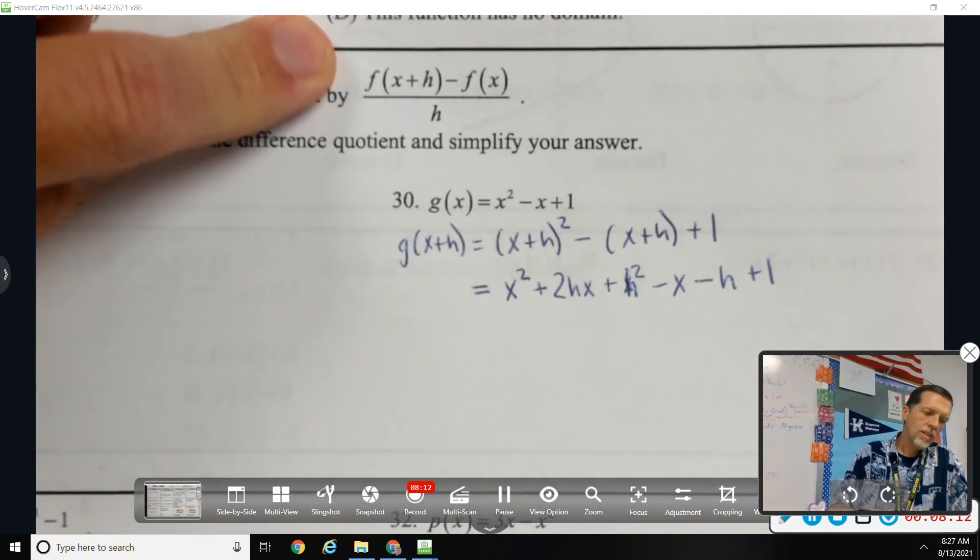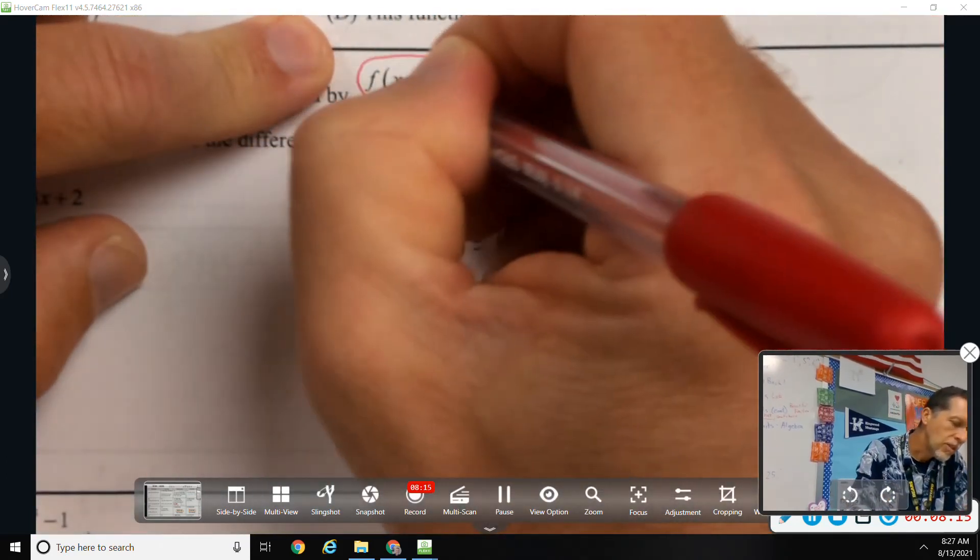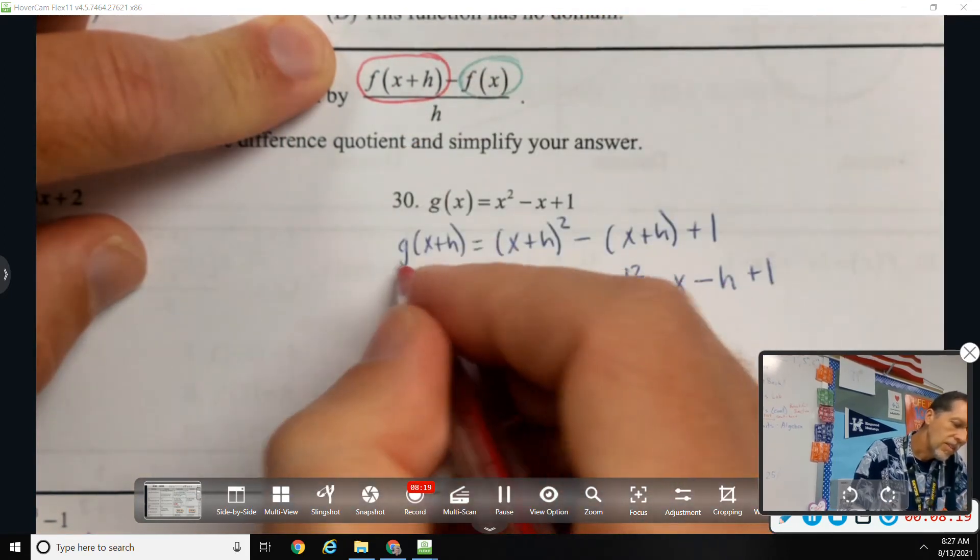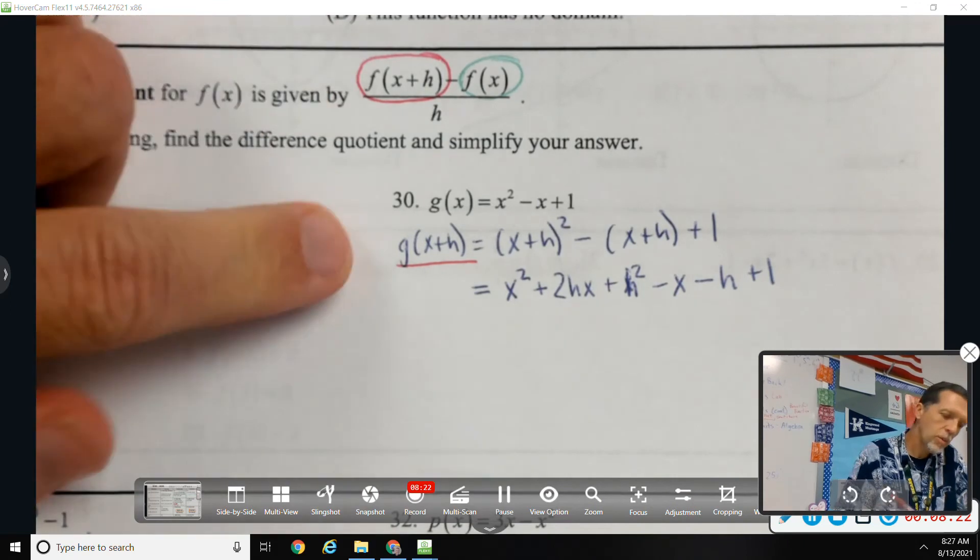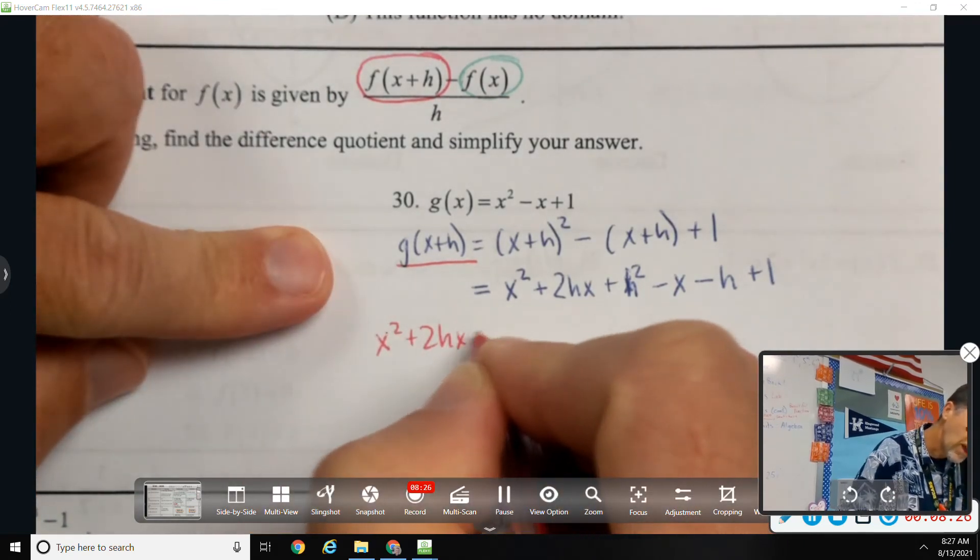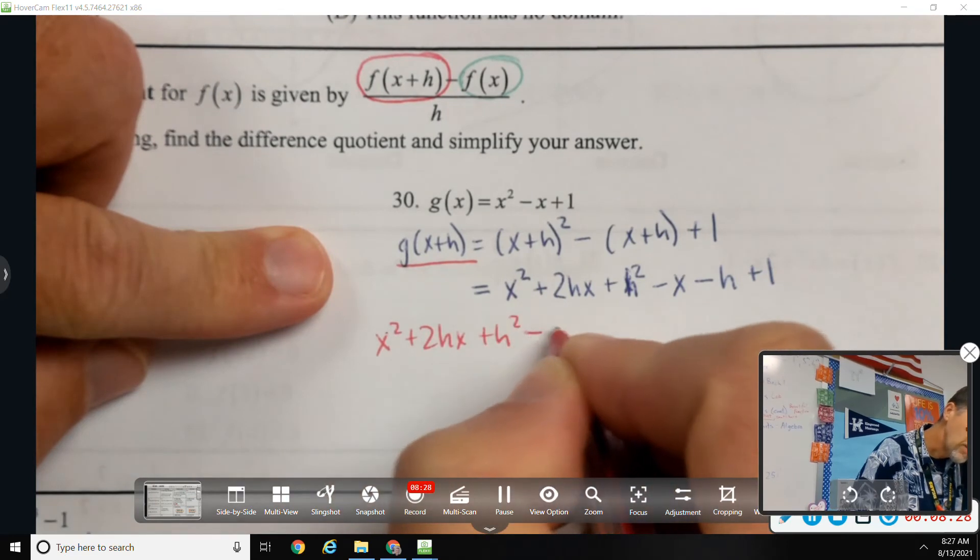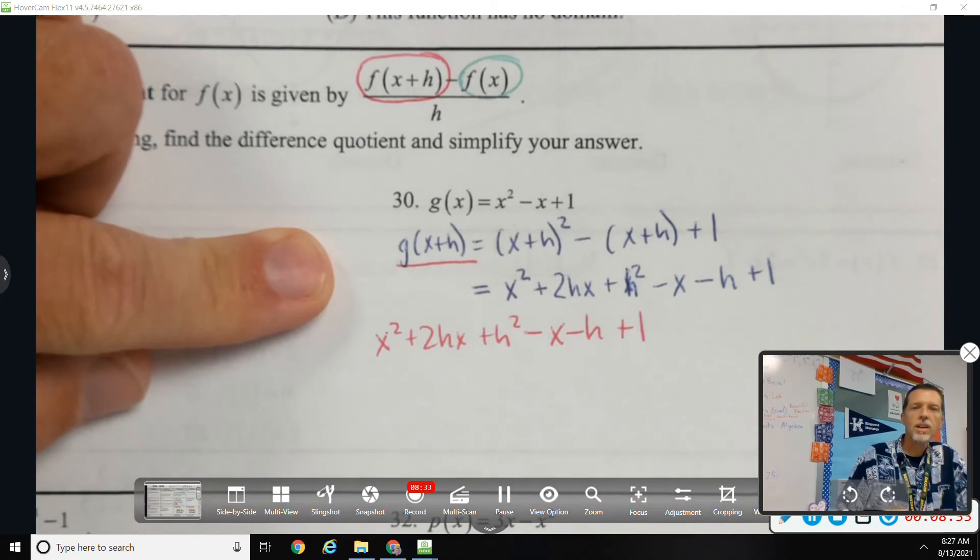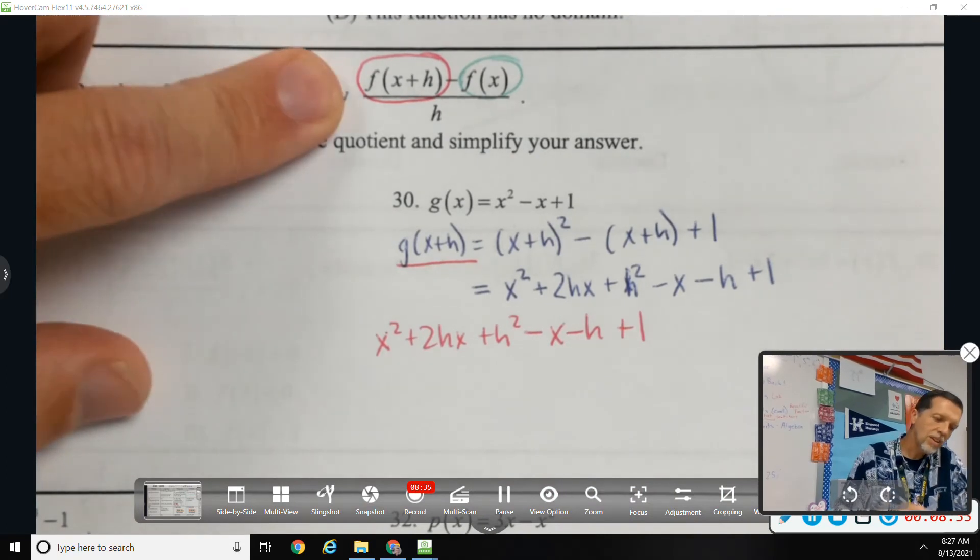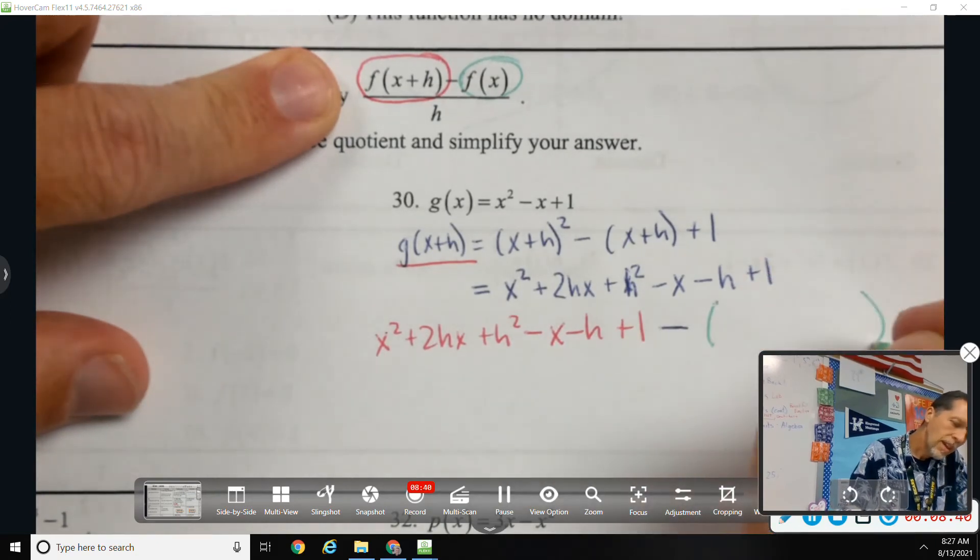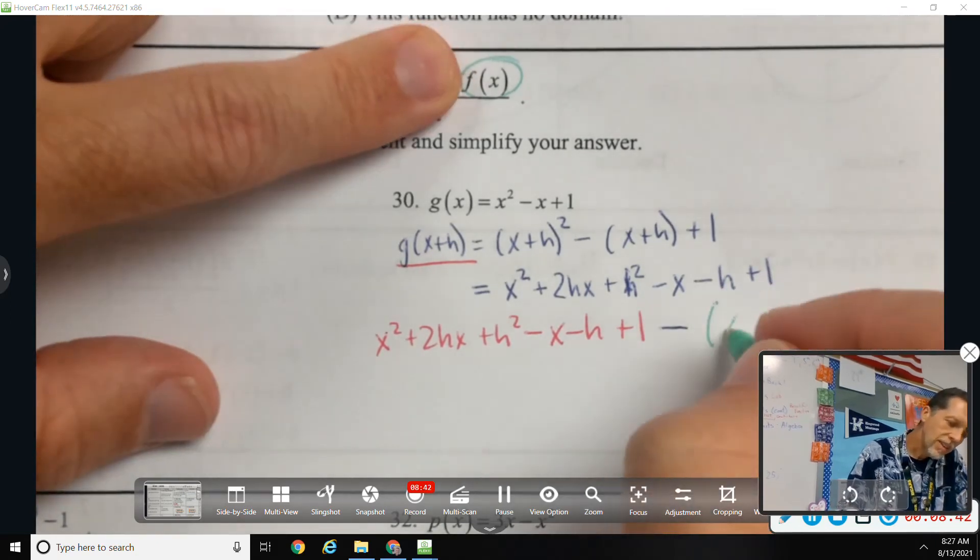Okay, so let me use the same color scheme as yesterday. So for f of x plus h, I'll put that in red: x squared plus 2hx plus h squared minus x minus h plus one. All of that's f of x plus h, minus f of x: x squared minus x plus one, and then all of that over h.